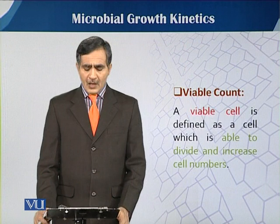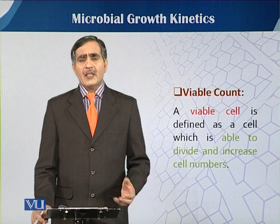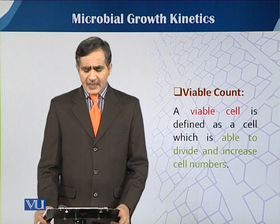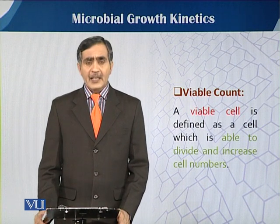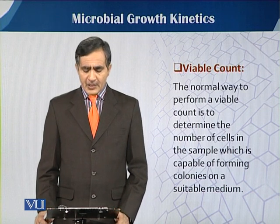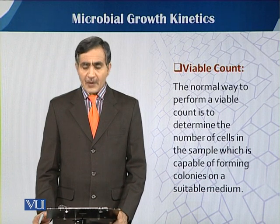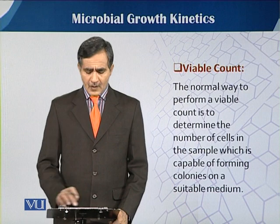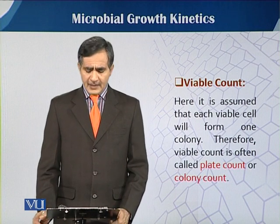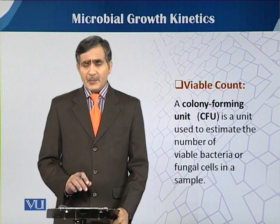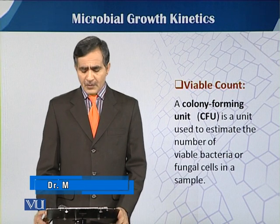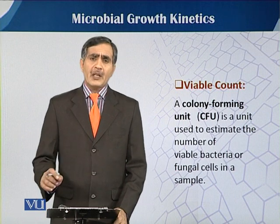Concerning the viable count: viable count is mostly done in a Petri plate having solid media, mostly called agar medium, along with other supplements. A viable cell is defined as a cell which is able to divide and increase in cell number. The normal way to perform the viable count is to determine the number of cells in a sample which are capable of forming colonies on a suitable medium. Those cells which have the ability to grow are then counted on the plate — this is basically the colony count, known as Colony Forming Units or CFU.